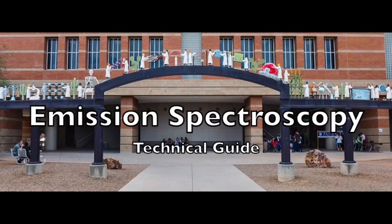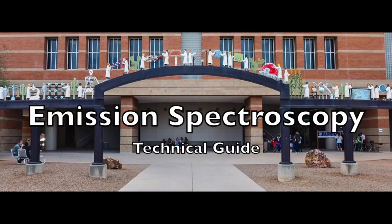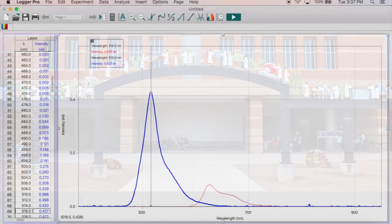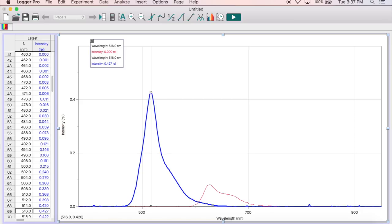In this video, I will demonstrate how to perform emission spectroscopy using a spectrometer and LoggerPro software. Emission spectroscopy allows you to quantify the intensity of light emitted from a substance, as well as determine the wavelength of light that it emits.